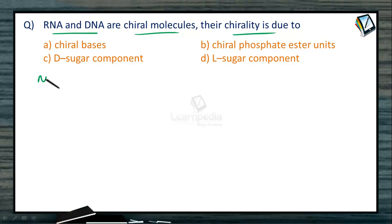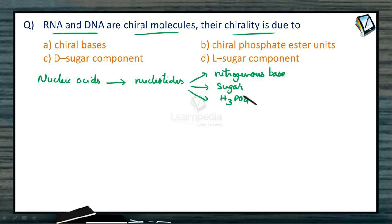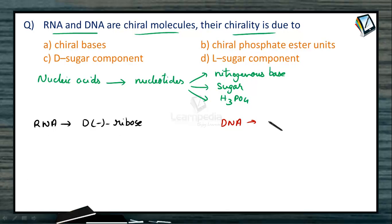Both RNA and DNA are called nucleic acids, and these nucleic acids are polymers of nucleotides. A nucleotide has three components: one is the nitrogenous base, the second is the sugar, and the third is phosphoric acid. The sugar present in RNA is D-ribose, whereas the sugar present in DNA is D-2-deoxyribose.